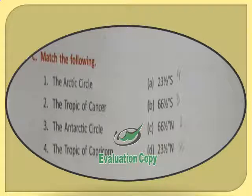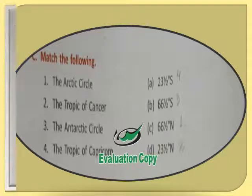For the match the following: the Arctic Circle is at 66 and a half degrees north. These are all important lines of latitudes. The Tropic of Cancer is at 23 and a half degrees north. The Antarctic Circle is at 66 and a half degrees south. And the Tropic of Capricorn is at 23 and a half degrees south.